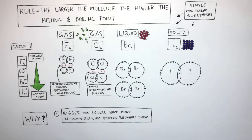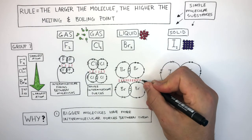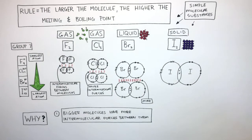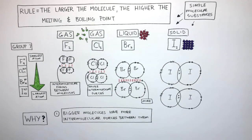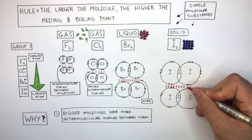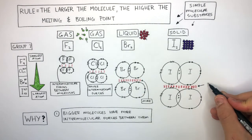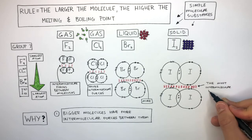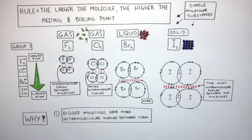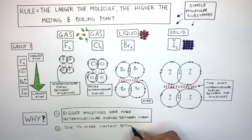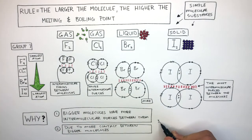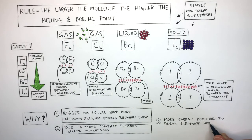And between these two bromine molecules, there are more intermolecular forces again because the molecules are bigger. Between the iodine molecules, there are intermolecular forces, and you can see how the iodine molecules have the most intermolecular forces between them. So, bigger molecules have more intermolecular forces between them due to more contact between bigger molecules.